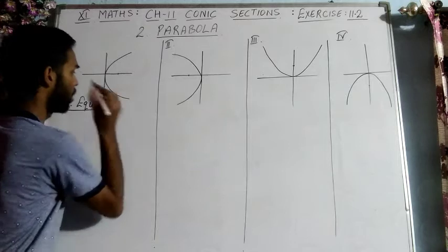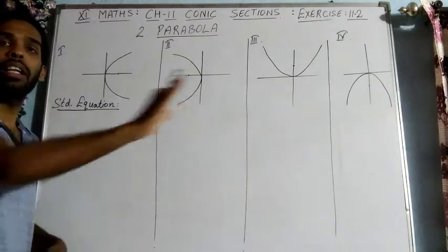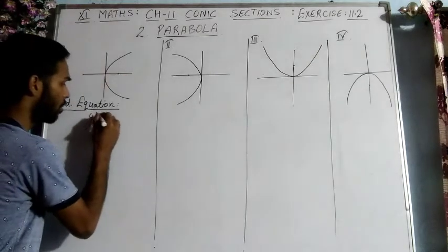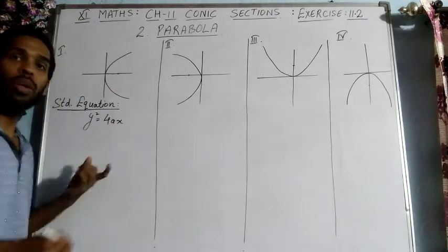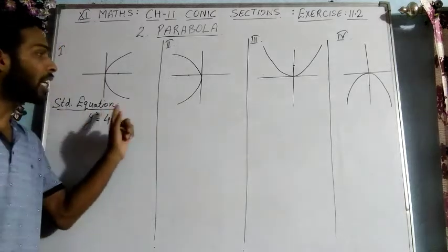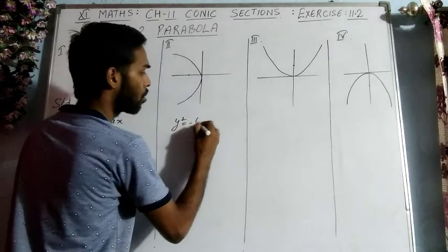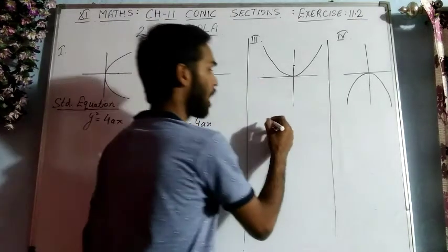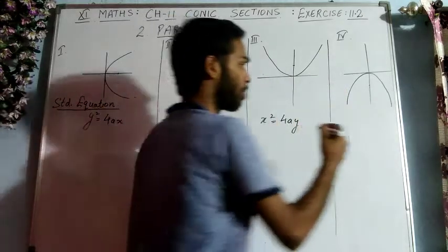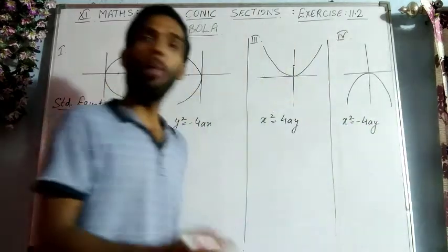So the four categories of parabola each have their own heading and equation. The equations are: y² = 4ax for the first type, y² = −4ax for the second type, x² = 4ay for the third type, and x² = −4ay for the fourth type.